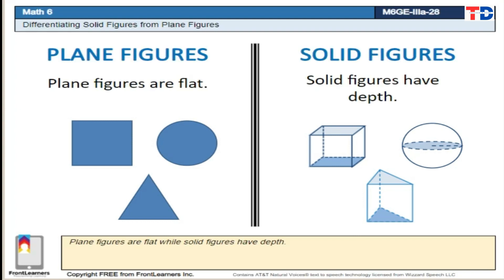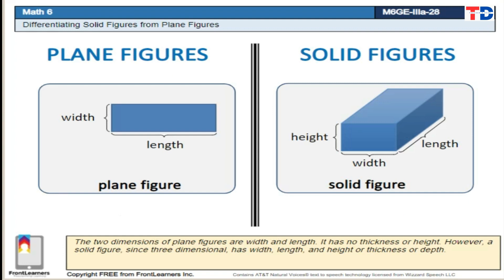Plane figures are flat, while solid figures have depth. The two dimensions of plane figures are width and length. It has no thickness or height. However, a solid figure, since three-dimensional, has width, length, and height or thickness or depth.